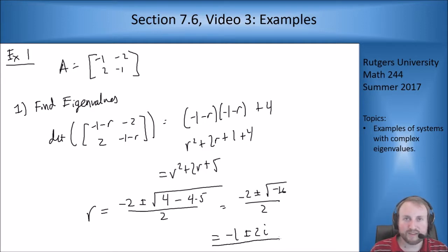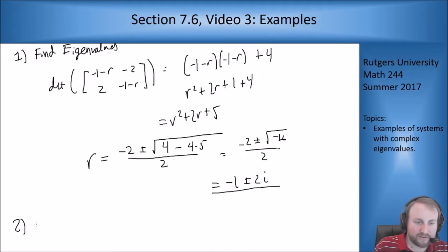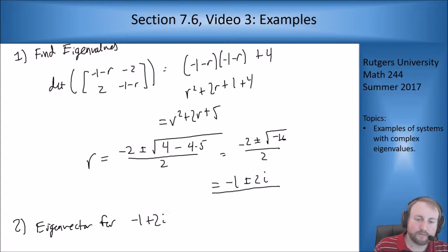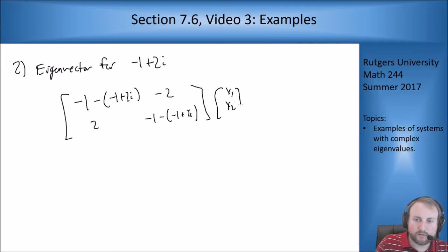So we're in the complex eigenvalue case. So now what I can do is now I just want to pick one. I'll pick the positive root, the plus 1 plus 2i root. And then we're going to solve for the eigenvectors using that. So eigenvector for negative 1 plus 2i. So I just want to plug in. So I had negative 1 minus r, negative 1 plus 2i, minus 2, 2, and then minus 1 minus negative 1 plus 2i, x1, x2 equals 0.